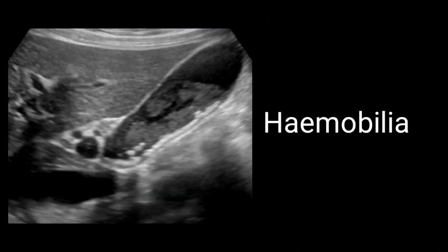Blood clot within the gallbladder and in the intrahepatic biliary channels is called hemobilia. This is secondary to trauma, percutaneous biliary procedures, or liver biopsies. Blood clots usually appear on ultrasound images as echogenic material, sometimes with mixed echogenicity. They may be mobile and may appear tubular if within intrahepatic biliary channels. Write on the report that echogenic material is seen within the lumen of the gallbladder or intrahepatic biliary channels, and that findings are suggestive of hemobilia.